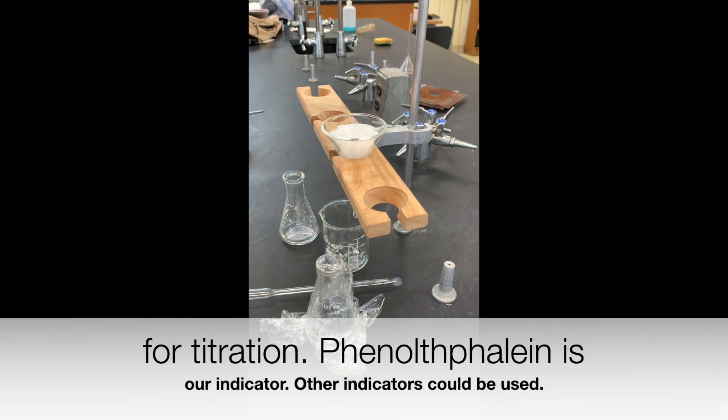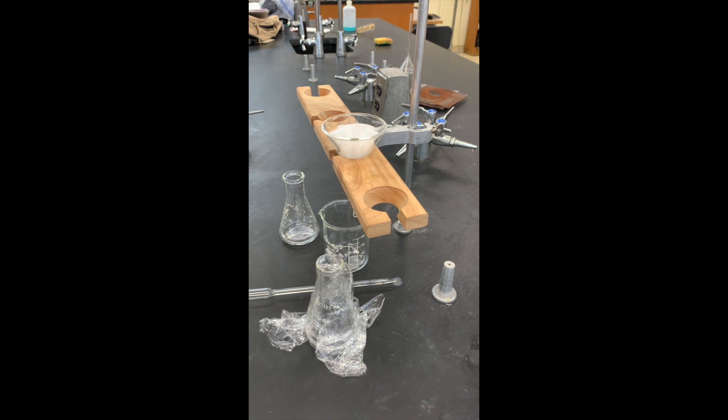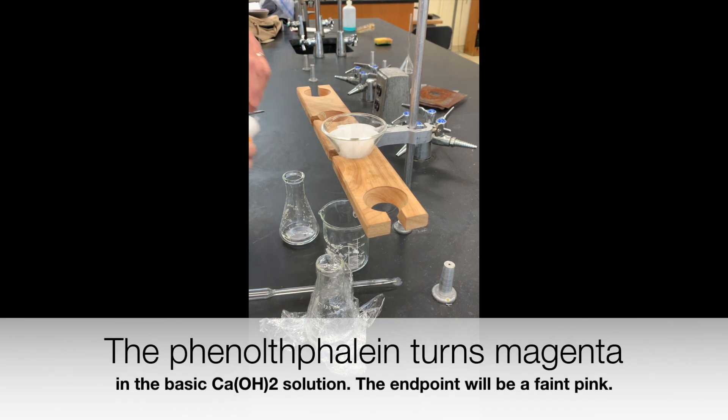Phenolphthalein indicator and about 25 milliliters of water are also added. Other indicators could be used. The phenolphthalein turns magenta in the basic calcium hydroxide solution. The endpoint will be a faint pink.